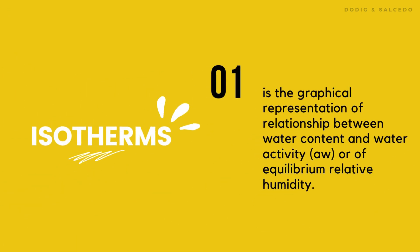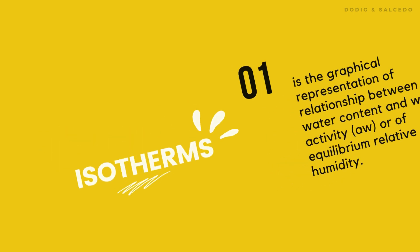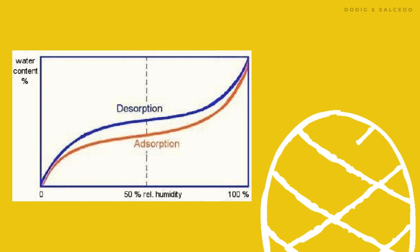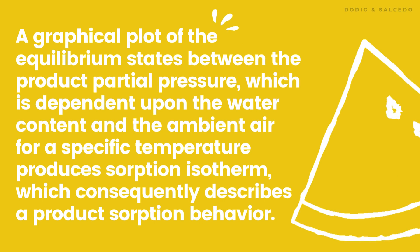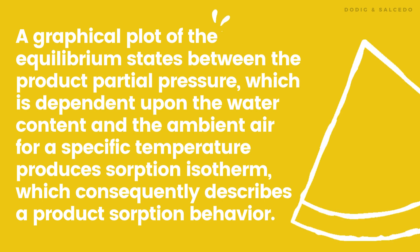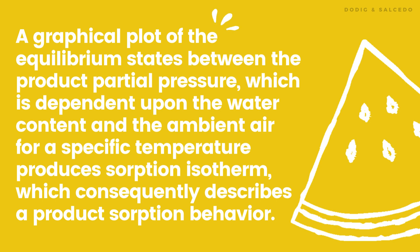Isotherms is the graphical representation of the relationship between water content and water activity or equilibrium relative humidity. The graph of equilibrium moisture content of a material versus relative humidity of the environment at a given temperature is referred to as sorption or desorption isotherms. A graphical plot of the equilibrium states between the product partial pressure, which is dependent upon the water content, and the ambient air for a specific temperature produces a sorption isotherm, which consequently describes a product's sorption behavior.